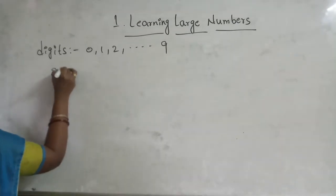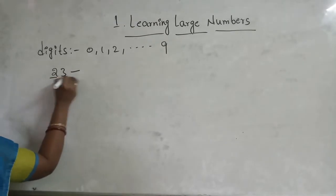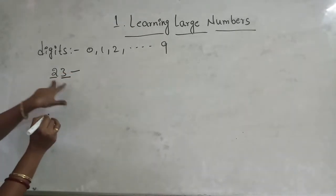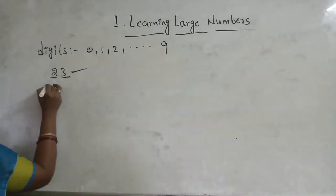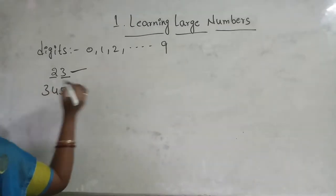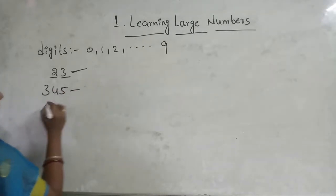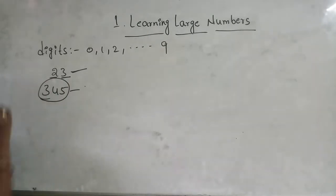For example, I take two digits. These are two digits like three. I am forming one number. Now next, I will take three digits. I am forming one single number. This is a three digit number.